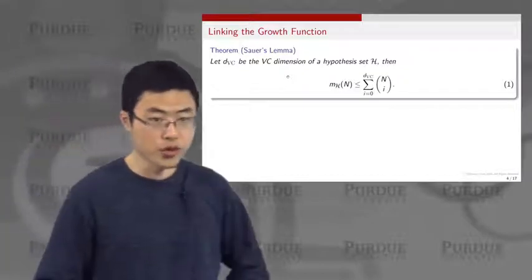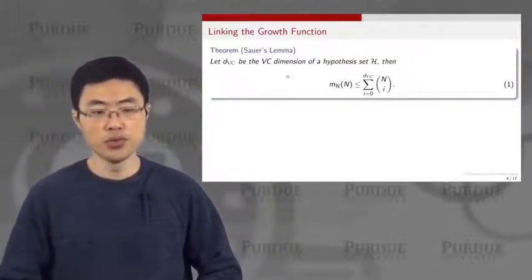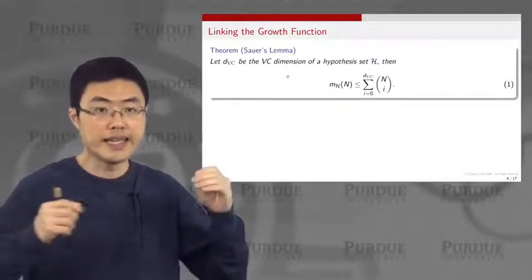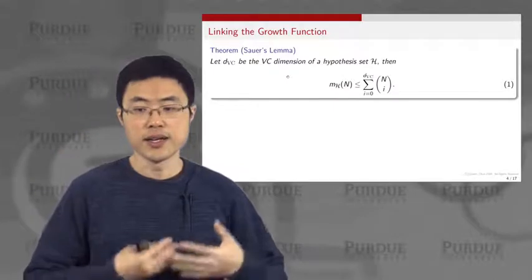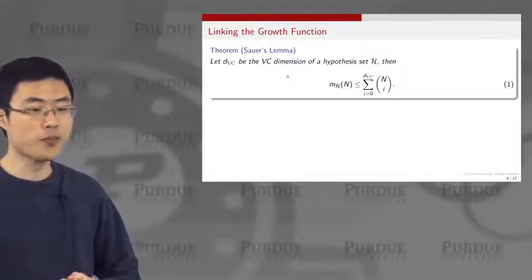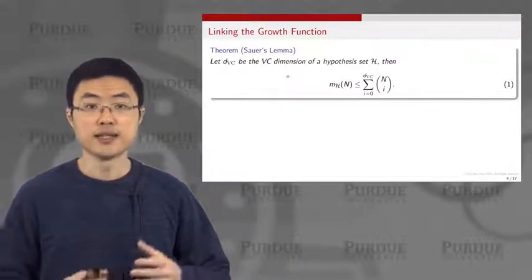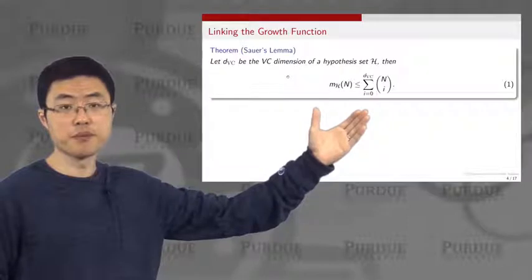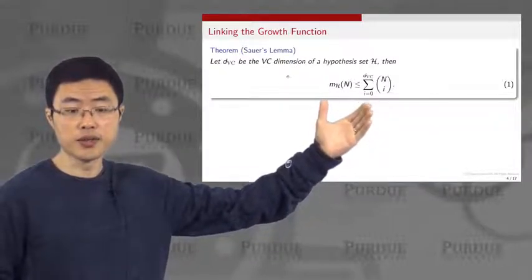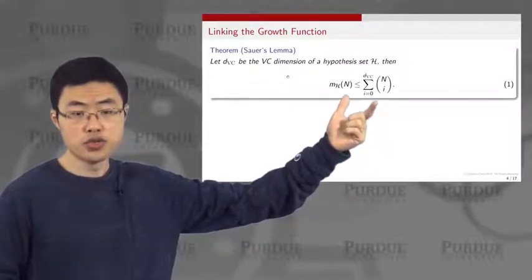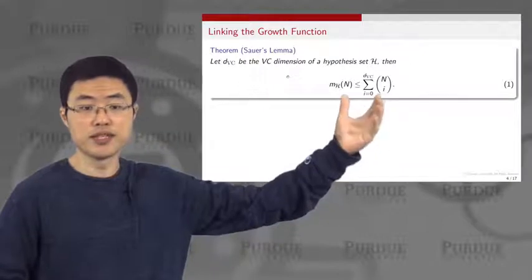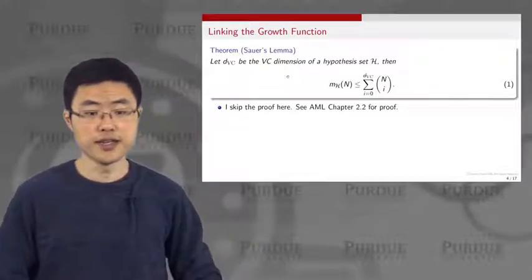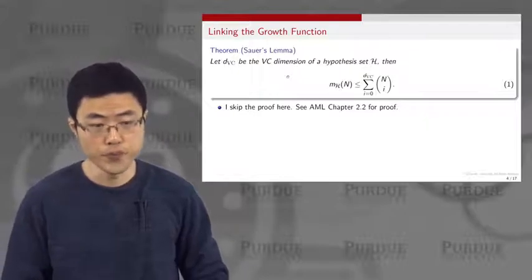In today's lecture, we want to link the VC dimension to the growth function, and by doing this we will be able to put the notion of VC dimension into our generalization bound and draw interpretations from that. To start with, I point you to the Sauer Lemma. The Sauer Lemma says that the growth function m_H(n) is upper bounded by the summation of combinatorial terms: the sum of n-choose-i for i from 0 to the VC dimension. The proof of this result is in the textbook Learning from Data, chapter 2.2.